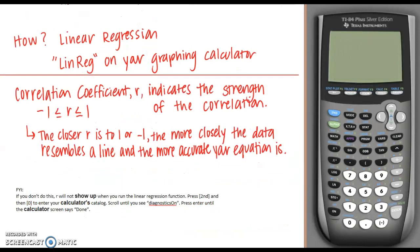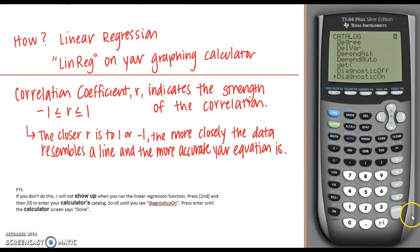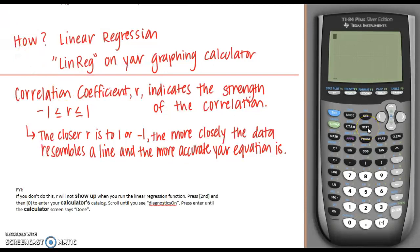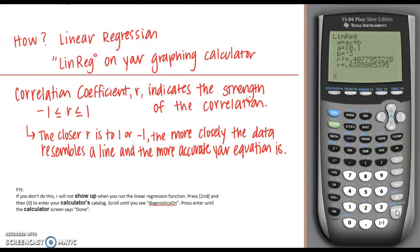You don't need to write this next part in your notes, but follow along while we turn on the diagnostics. Go to 2nd then 0 to open the catalog, scroll down to Diagnostics On, press Enter and Enter once more — it says Done. That means the correlation coefficient will show up the next time we use linear regression. If you go back to STAT, CALC, Linear Regression number 4 and press Enter twice, you can see the correlation coefficient r is now showing up. For the sample data, r is 0.6385, which is kind of in the middle — so that would not be a very strong or accurate equation for those data points.